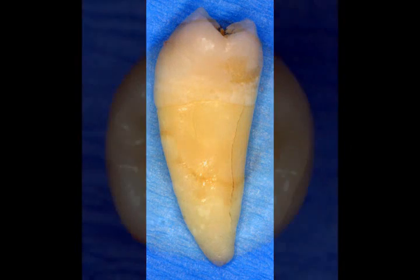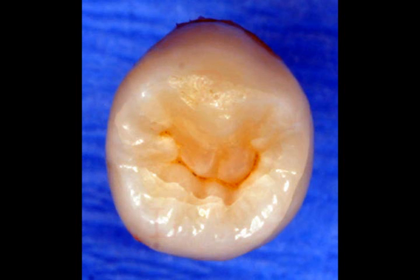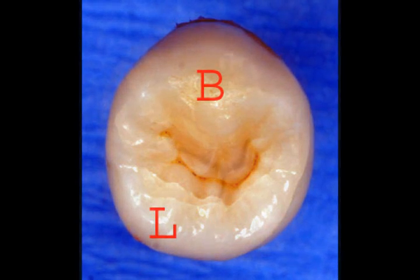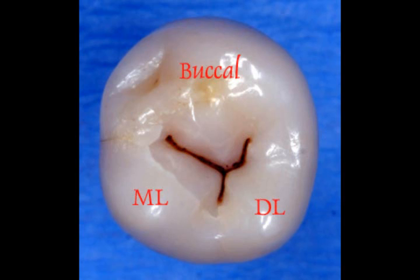The mandibular second premolar can have a variation in the number of cusps that it has. It can have two cusps or it can have three cusps. If there are two cusps, there is a buccal and a lingual cusp. If there are three cusps, there are a buccal, a mesial lingual, and a distal lingual cusp.